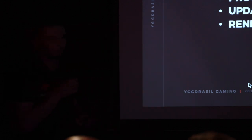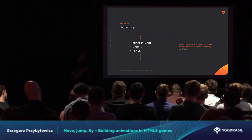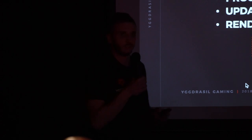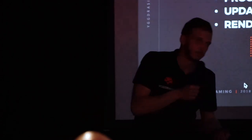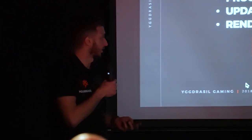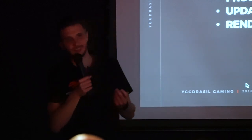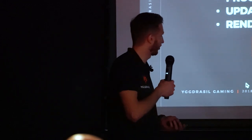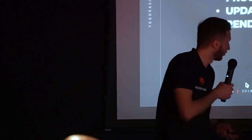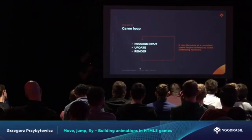The game loop is supposed to ensure that the game runs at consistent speeds despite differences in the underlying hardware. If you have two machines — one pretty old and one the newest — and the old one runs our game at 30 frames per second while the new one runs it at 60, then players on the new hardware will see everything twice as fast. That would be a disaster for us as game producers, and imagine what would happen in a multiplayer game. So we definitely need to get rid of this problem, and the game loop helps us do that.